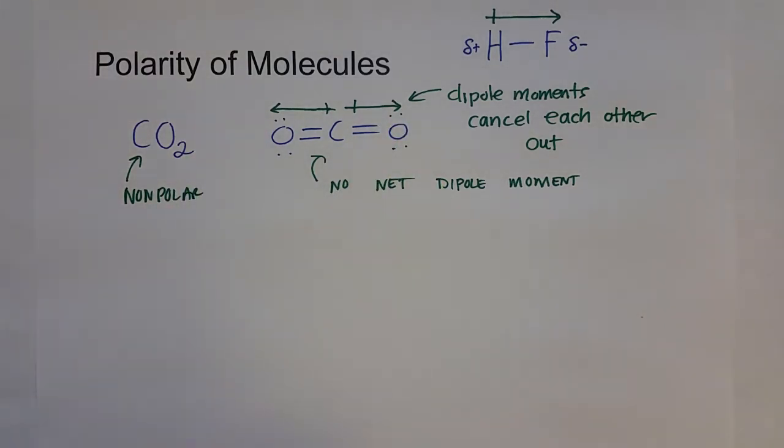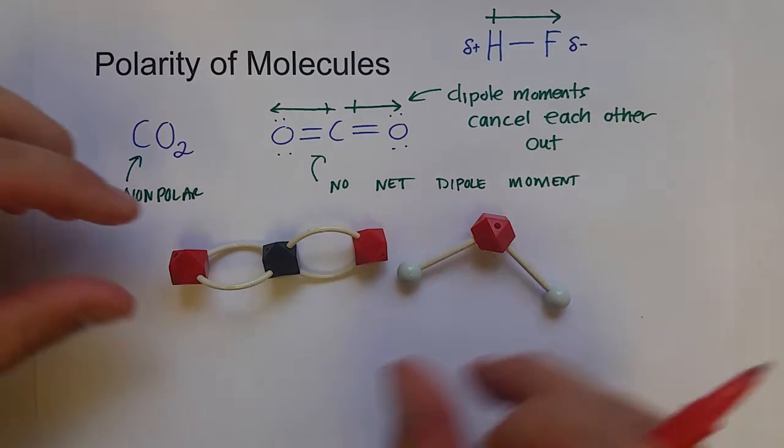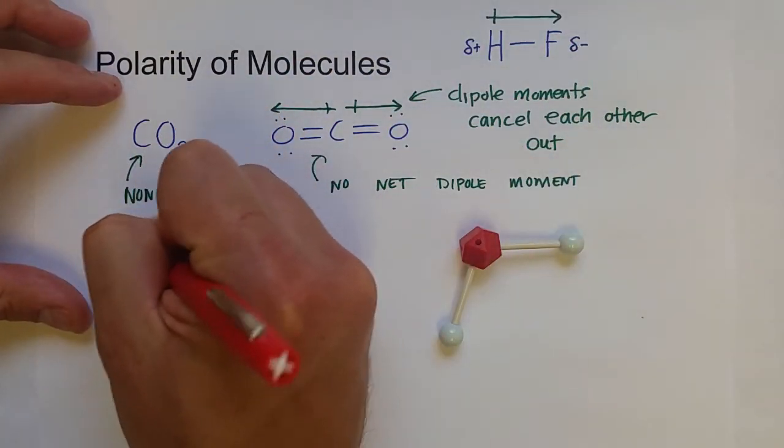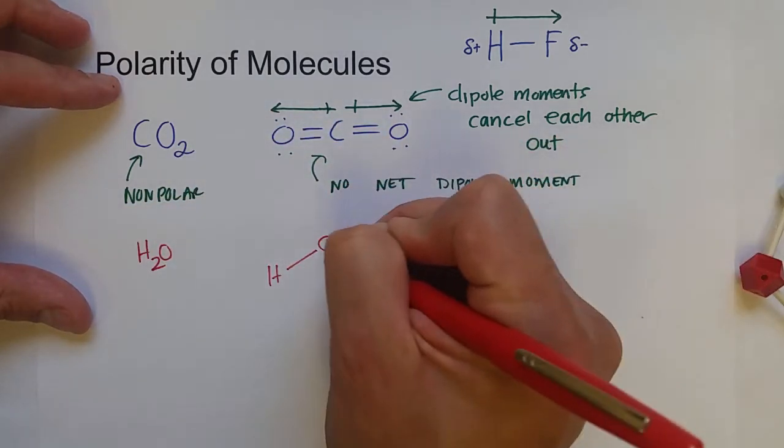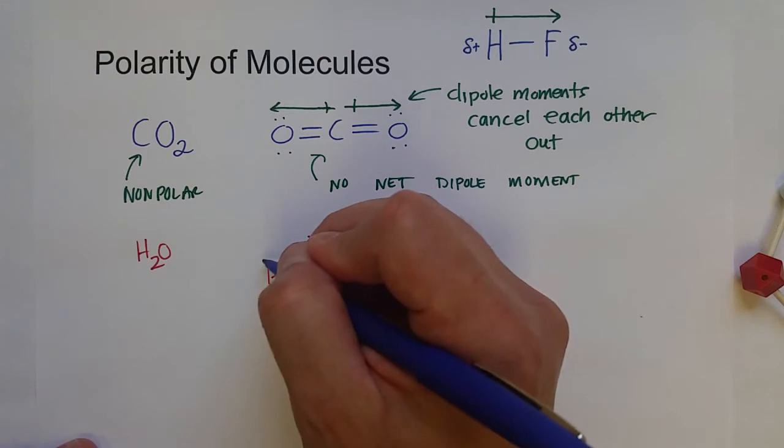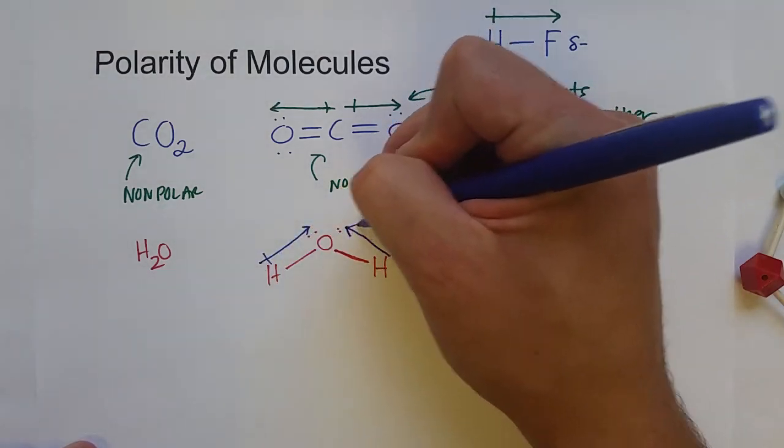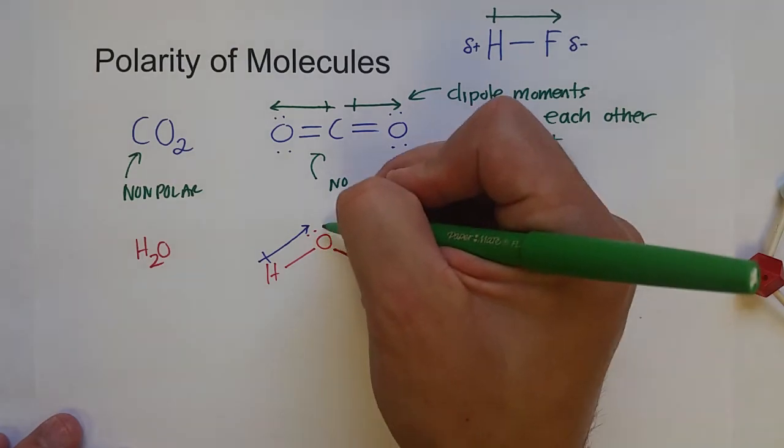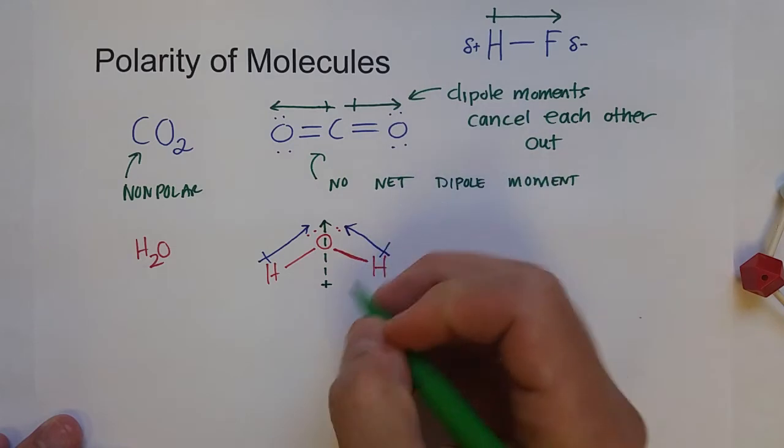This is very different for water molecule. Water molecule is not linear. It is bent because of the two lone pairs. So what happens with water, if we drew it with a little bit of geometry in mind, draw it as bent. There is a dipole moment being set up. This oxygen is pulling electrons from each hydrogen atom. But they don't cancel each other out. There's actually a net dipole moment towards the oxygen atom.